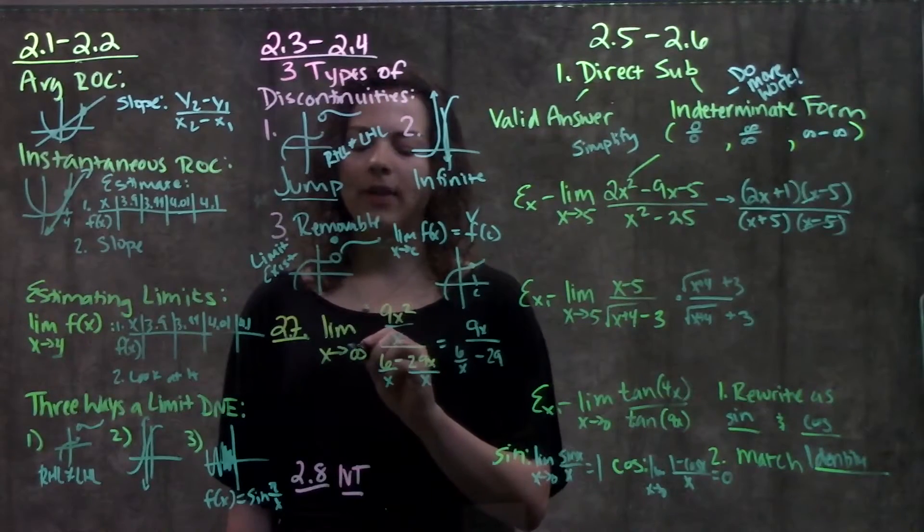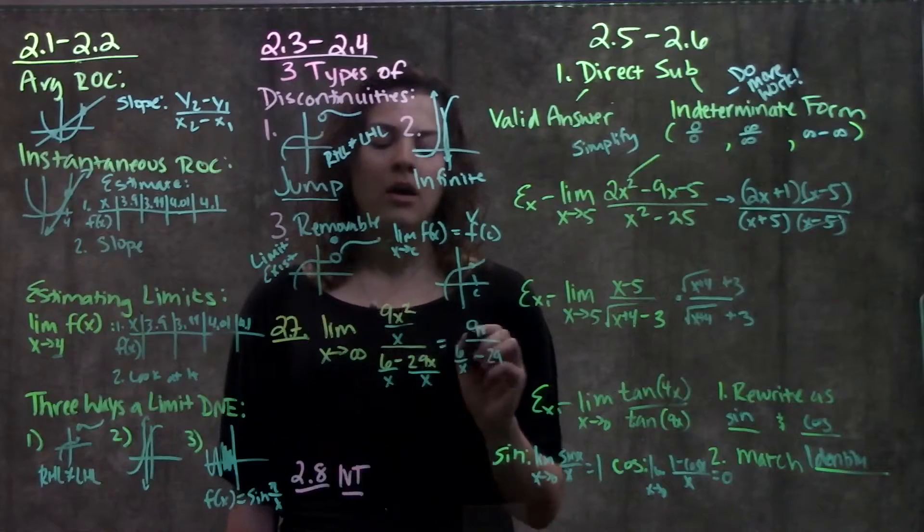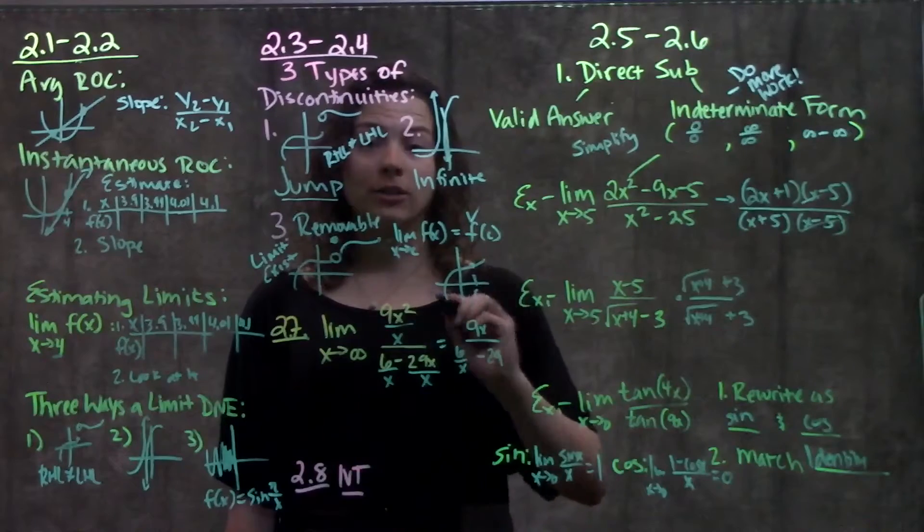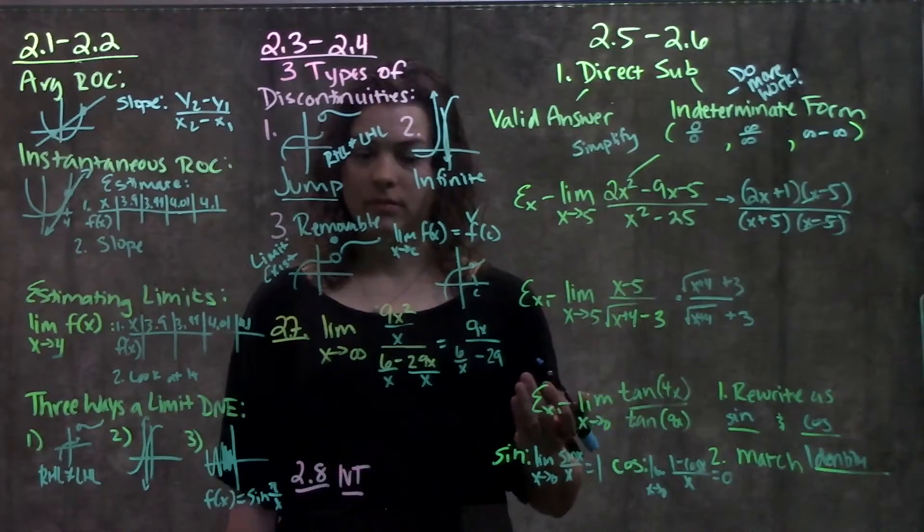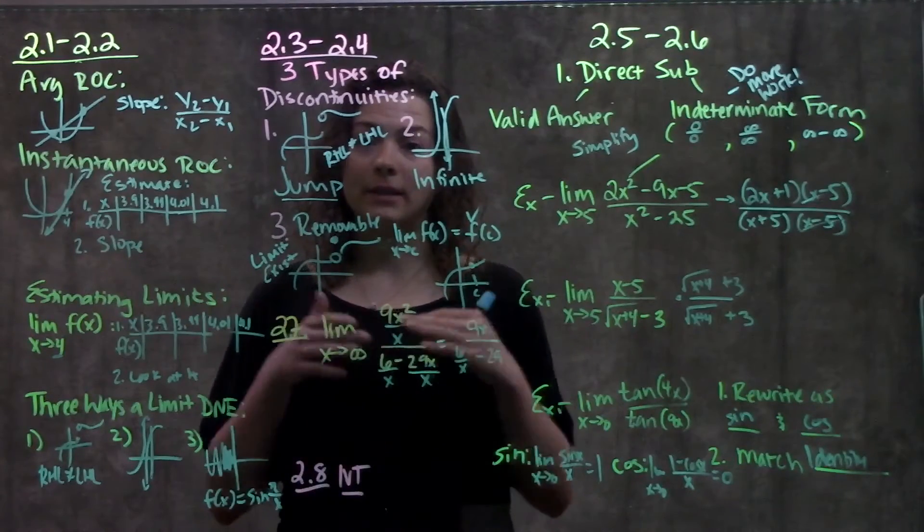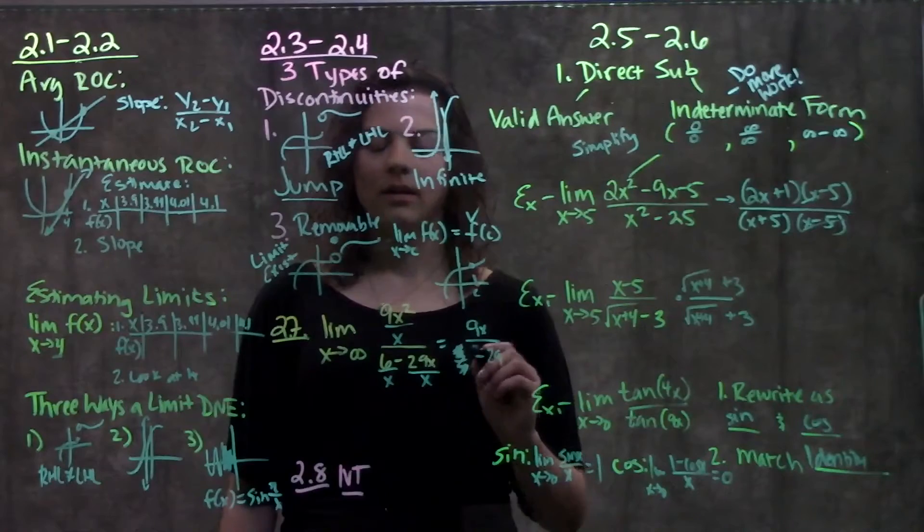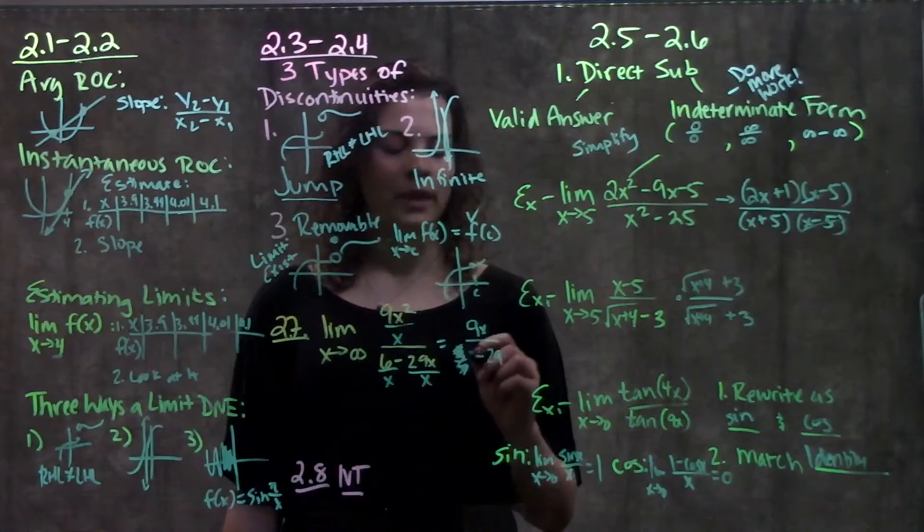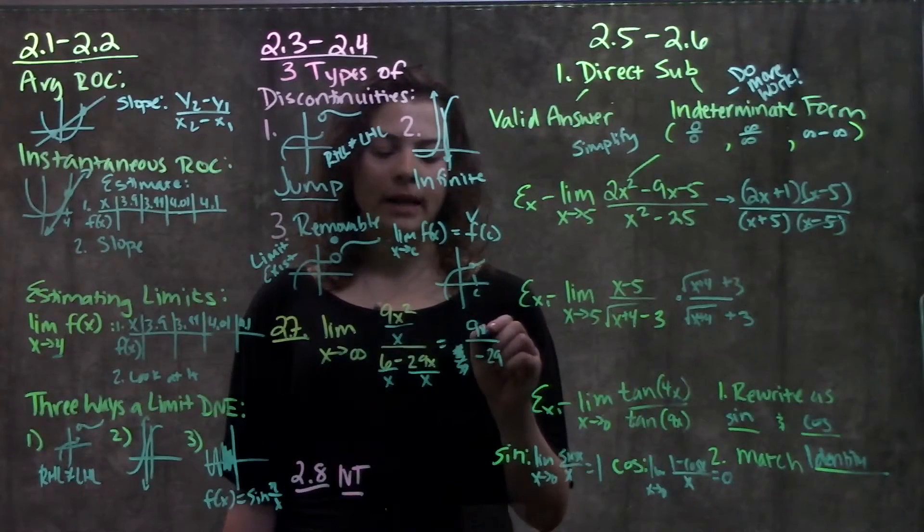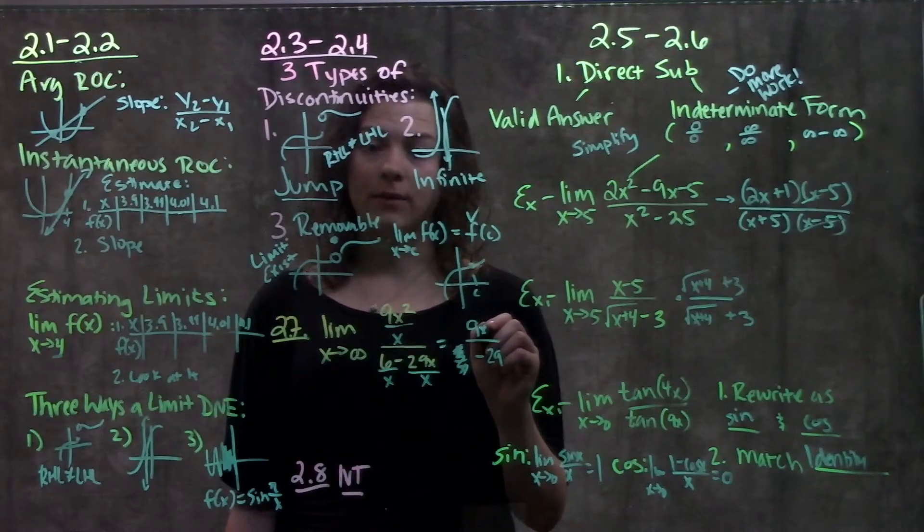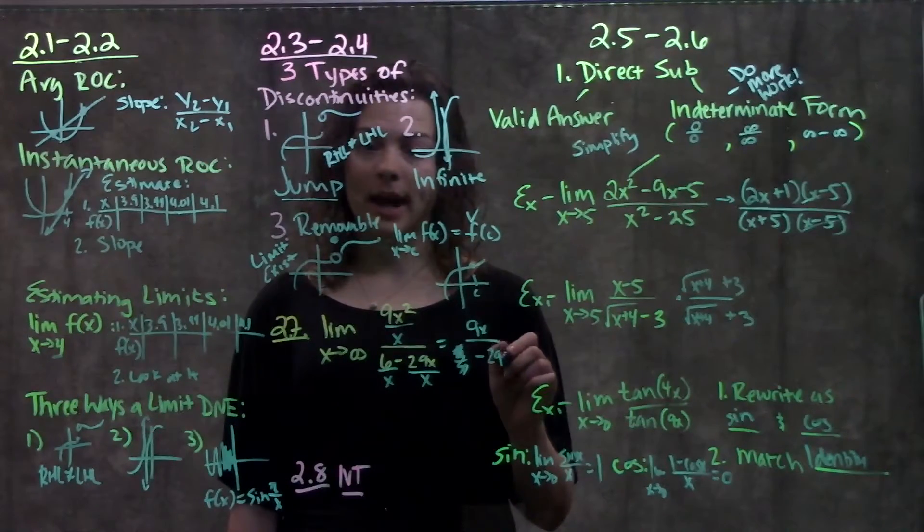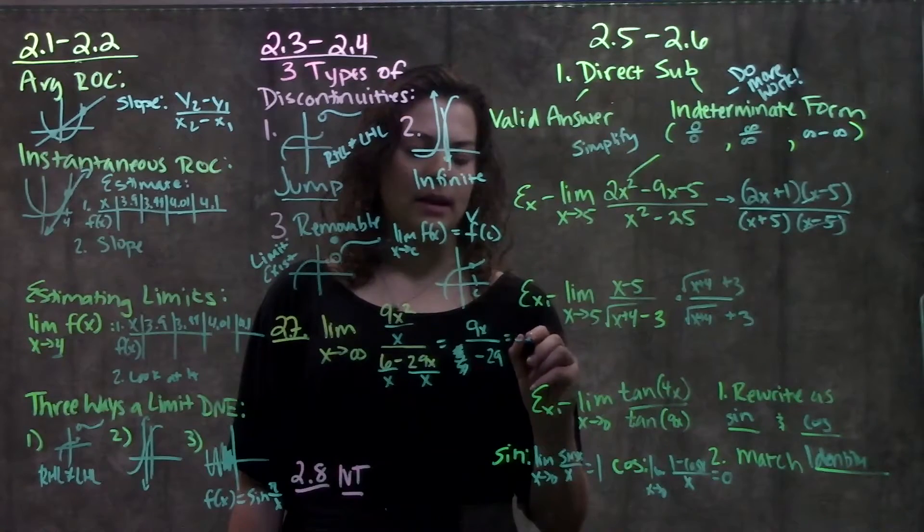From here, remember we have the limit as x approaches infinity. So if we have a number over x, either down here or in the numerator, we can just cross it out, it becomes 0, because if we have a super huge number in the denominator, how many times does super huge number go into small number? Basically 0 times. So now what I'm left with is just 9x over negative 29. If I were to plug in super huge numbers like infinity in for x on the top, I'd get huge infinity divided by negative 29. This will give me negative infinity.